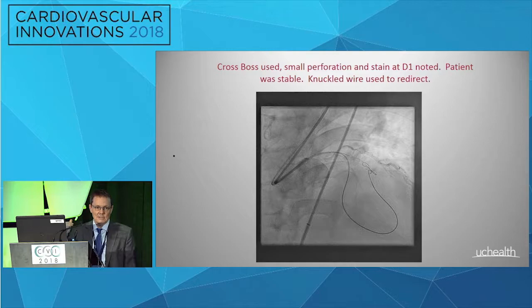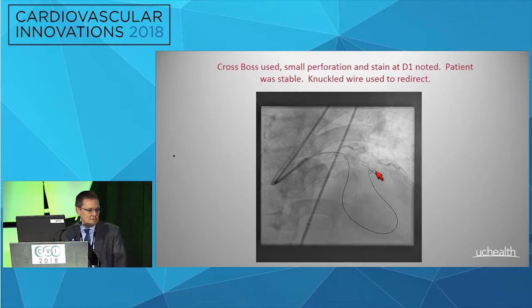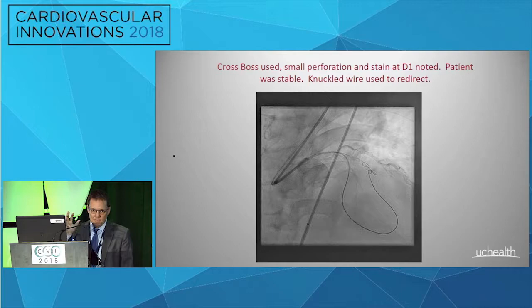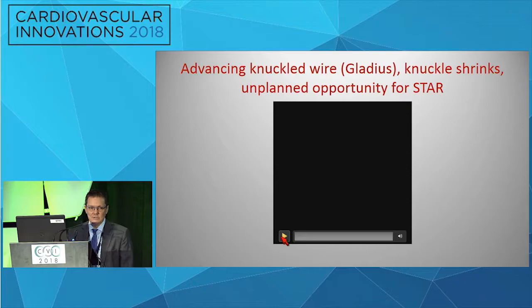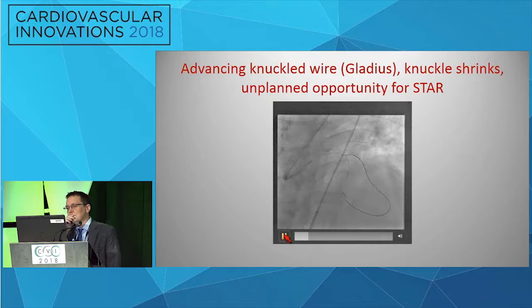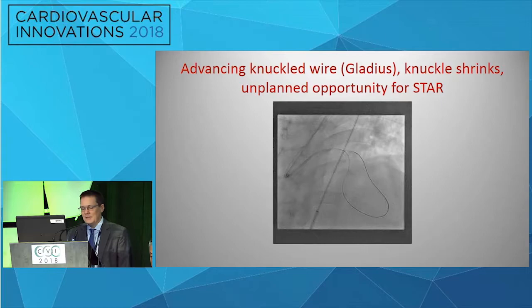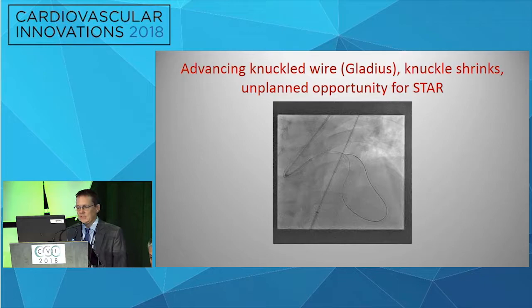A funny thing happened with the crossboss — you'll see this a lot in the right corner, that it's kind of a straight catheter and it will find branches on you. If you look carefully, what we have is a perf going. Just a stain, though, so it's really not hemodynamically significant; the patient's doing okay. My thought was I wasn't stopping the case. I'm going to move my base operation slightly more distal. I have a knuckled wire out here — this was sort of a happy accident. You'll see a big knuckle shrink right when you come around that curve. The stiffer body of the wire jams it out of the false lumen and the subluminal space into the true lumen.